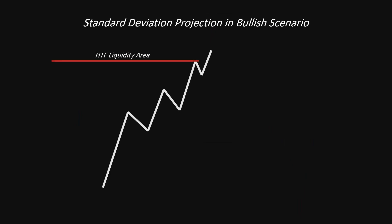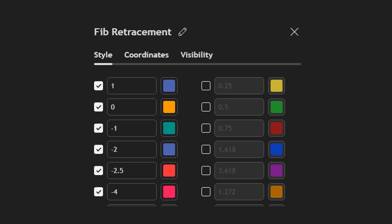One way to do this is by recognizing price action that indicates a potential manipulation leg. This includes a short-term high and a price break through that high before coming back down and shifting structure bearish. From there, we draw a Fibonacci from the high to the low and use it to project our targets. We anchor the Fibonacci tool to the high and low of an impulsive price move.